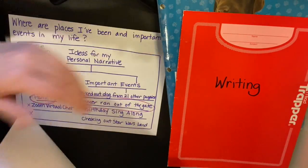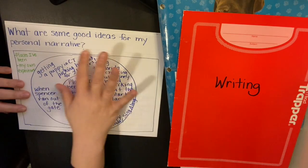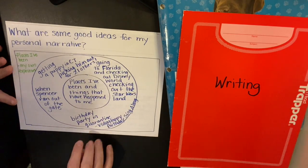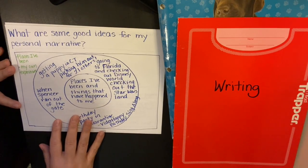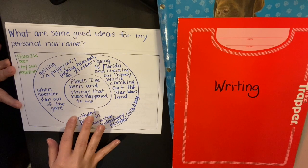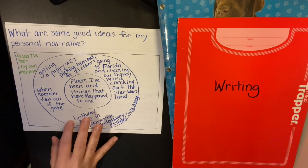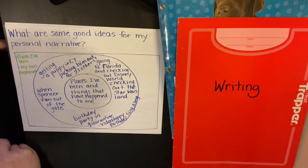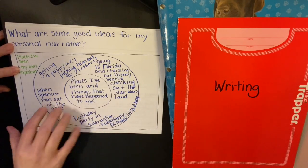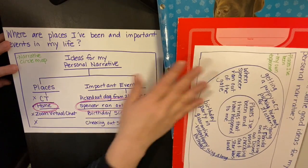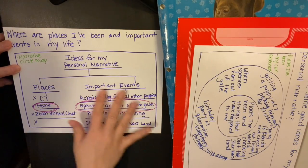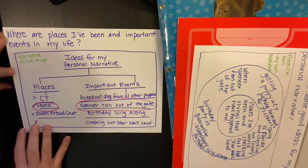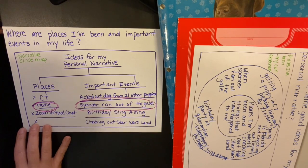The first thing that we did was we made a circle map. We started to brainstorm all different places that we've been and things that we might have done, or important events that might have happened to you. Then we needed to organize them before I could figure out which one made the most sense to be my best personal narrative idea.